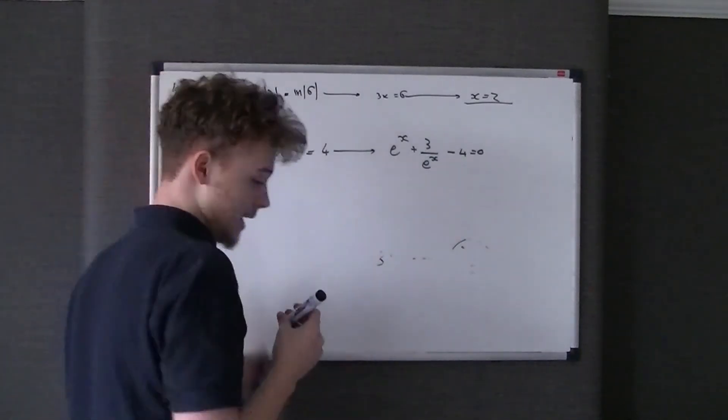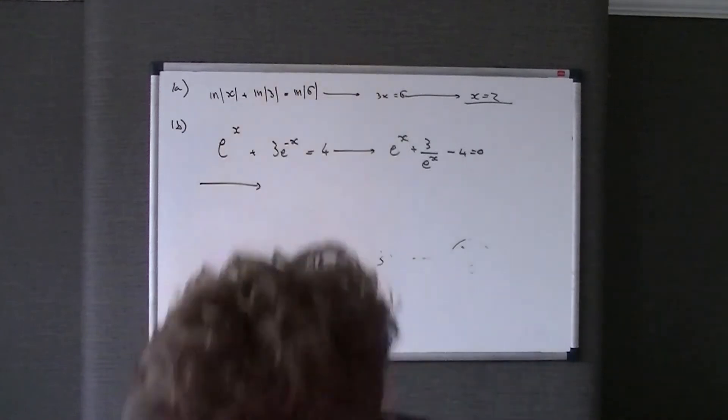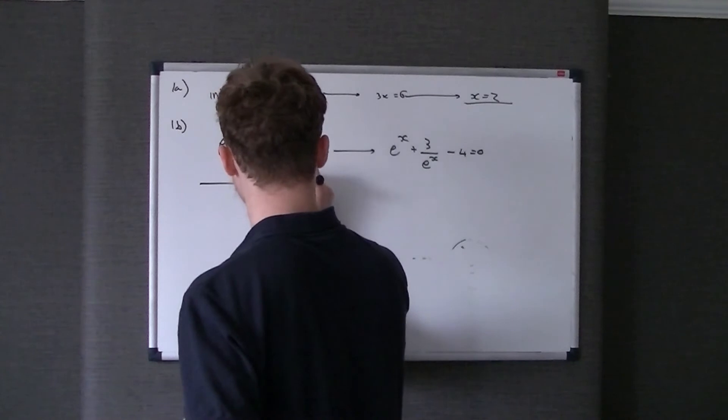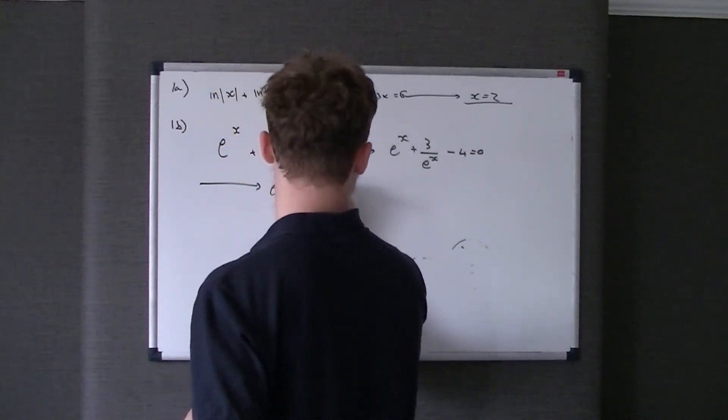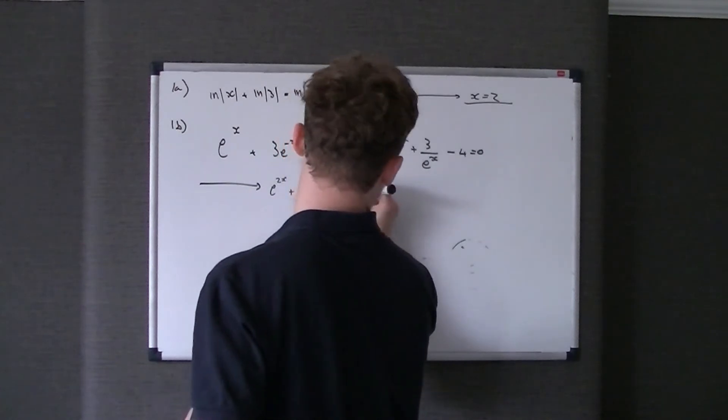And when we times e to the x by e to the x, we don't get e to the x squared, because when we times indices it's the same as adding them. So we get e to the 2x, and we add that to 3, take 4 e to the x, and that is equal to 0.